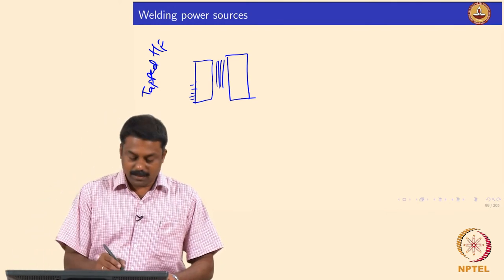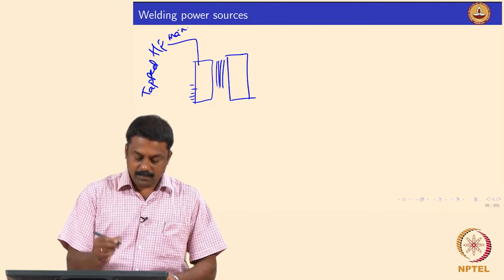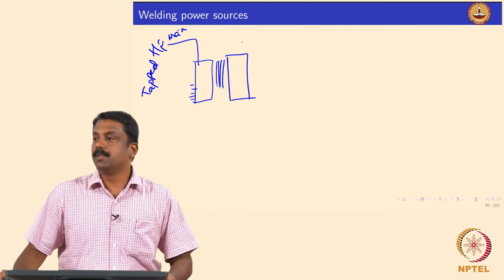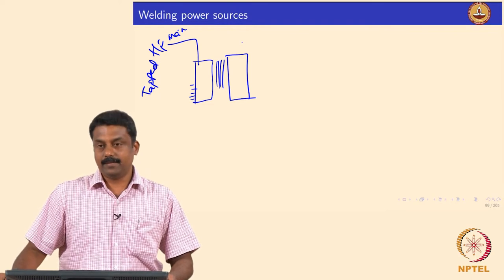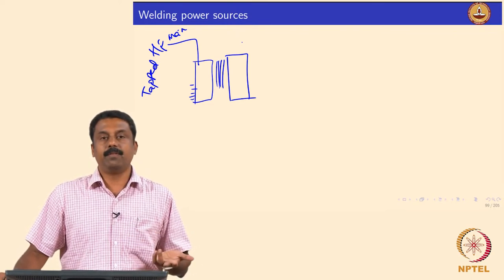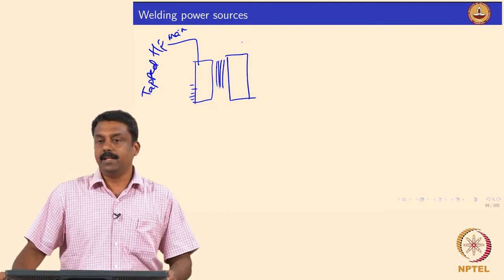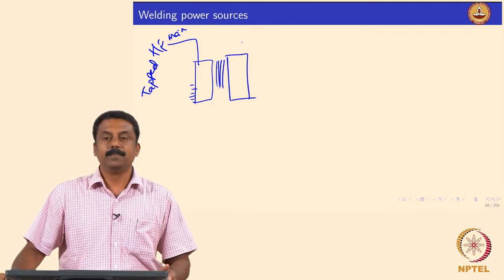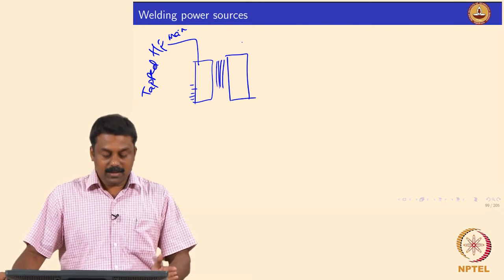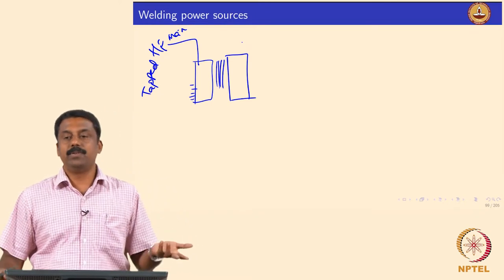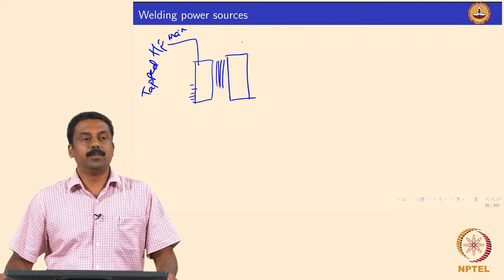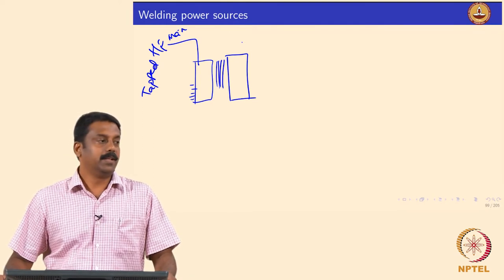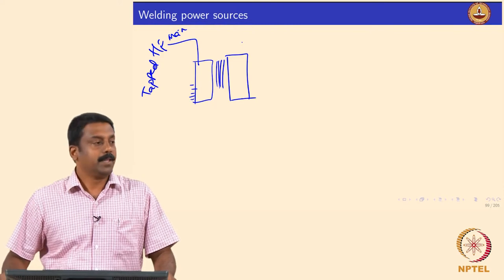You will have a transformer connected to the mains, and the output from this transformer is given to rectifiers to convert the alternating current into DC direct current. Then you will have an inductor to regulate the output to the arc. So we can change the high voltage connections from the mains to low voltage and high current, which is needed for arc ignition and subsequently for welding.